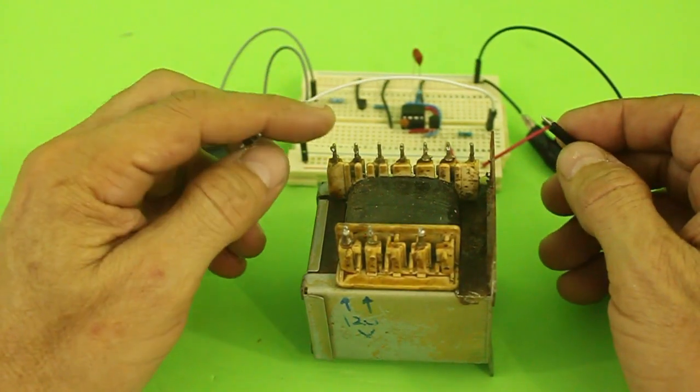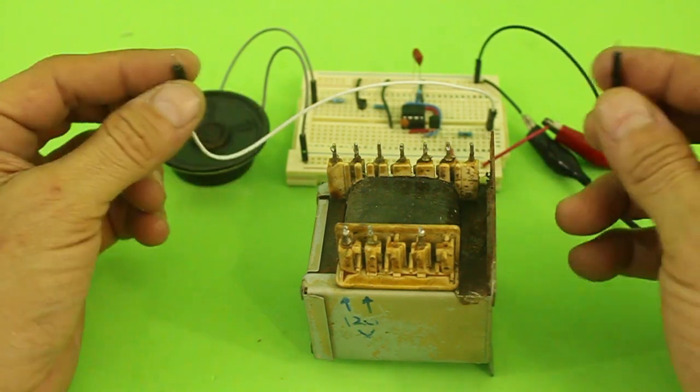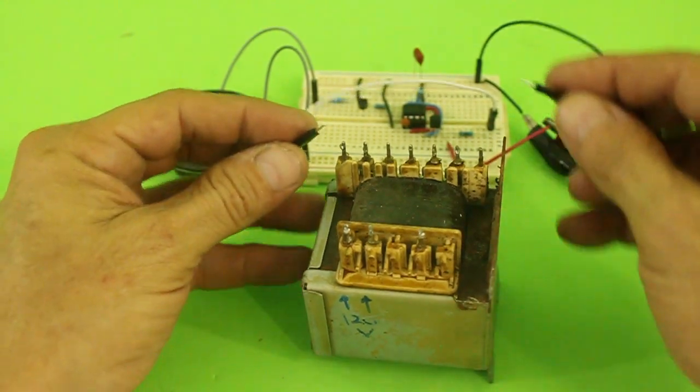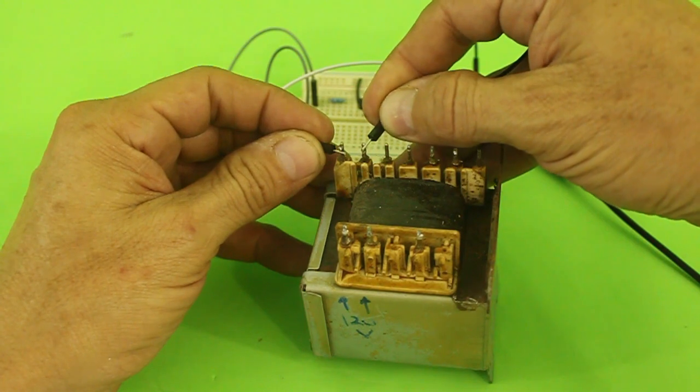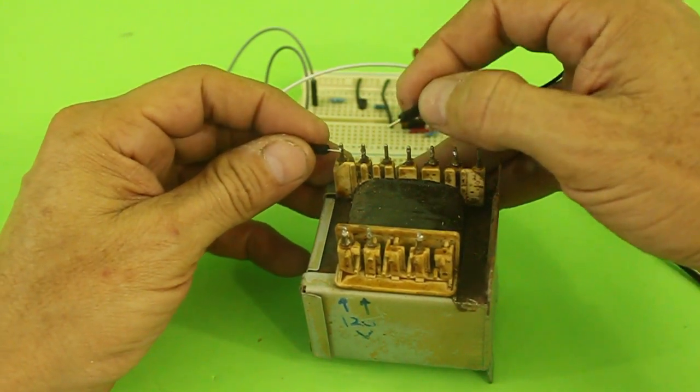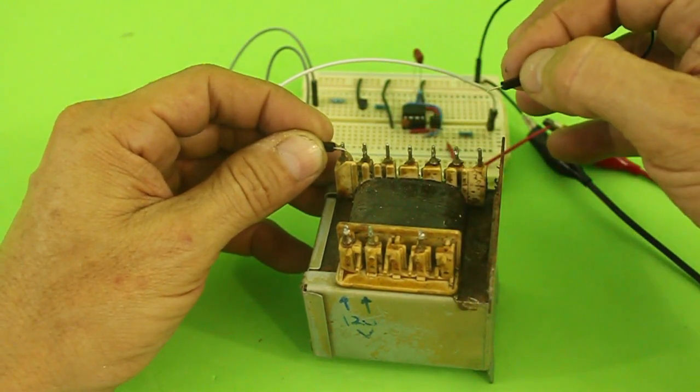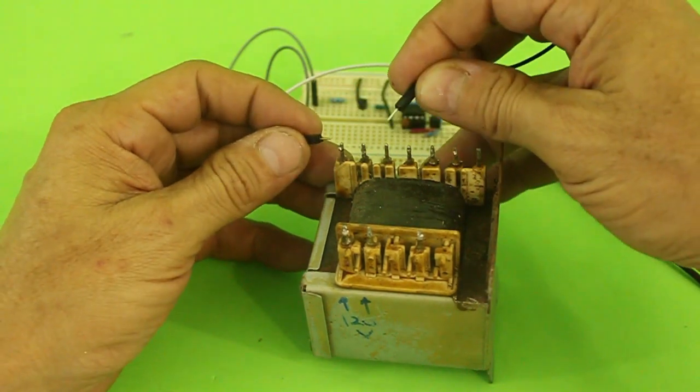If a pair of pins emit a sound, that means we have a coil that is connected to those pins. Let's see, pin 1 and 2, there we have a coil. And 1 with 3, 4, 5, 6, 7, there is no sound. So pin 1 and 2, there is a coil in there.